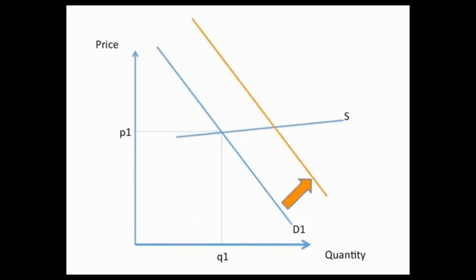Here we can see again demand increasing, D1 to D2 shift in the demand curve, but notice that this time in terms of the new equilibrium there is a much greater effect on the quantity than on the price. The price has only increased P1 to P2 but there is a big increase, a relatively big increase from Q1 to Q2, in terms of the quantity supplied.